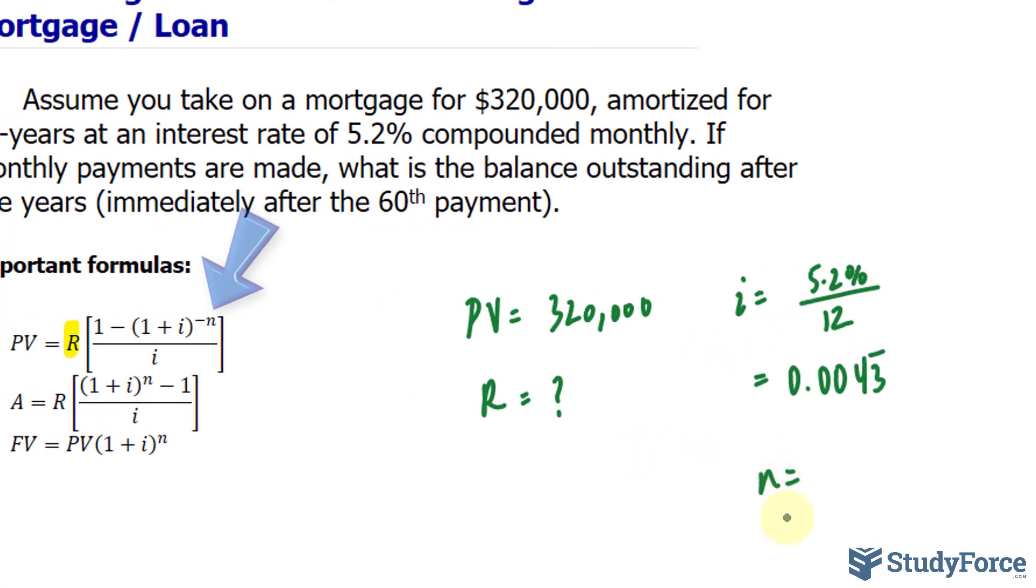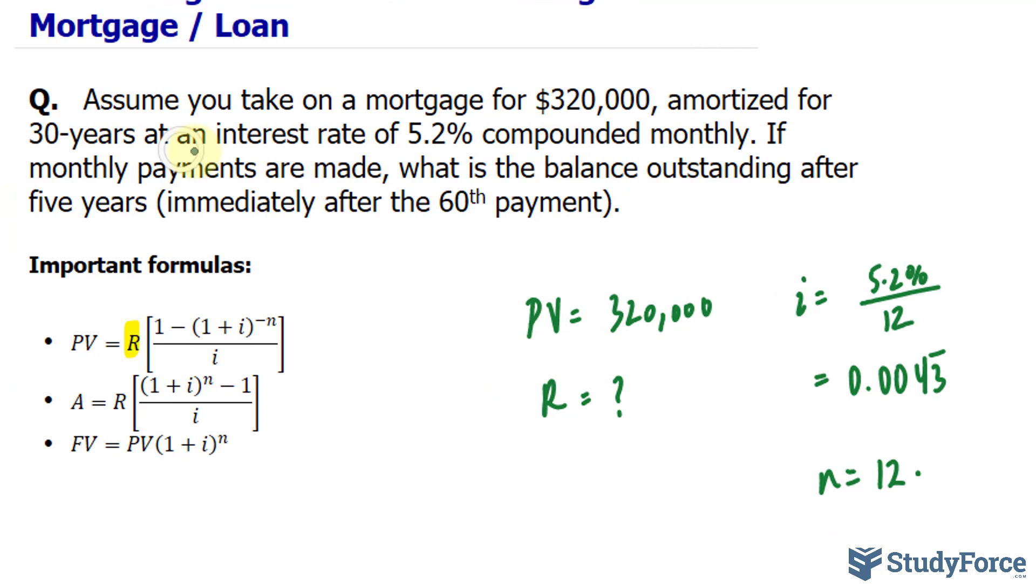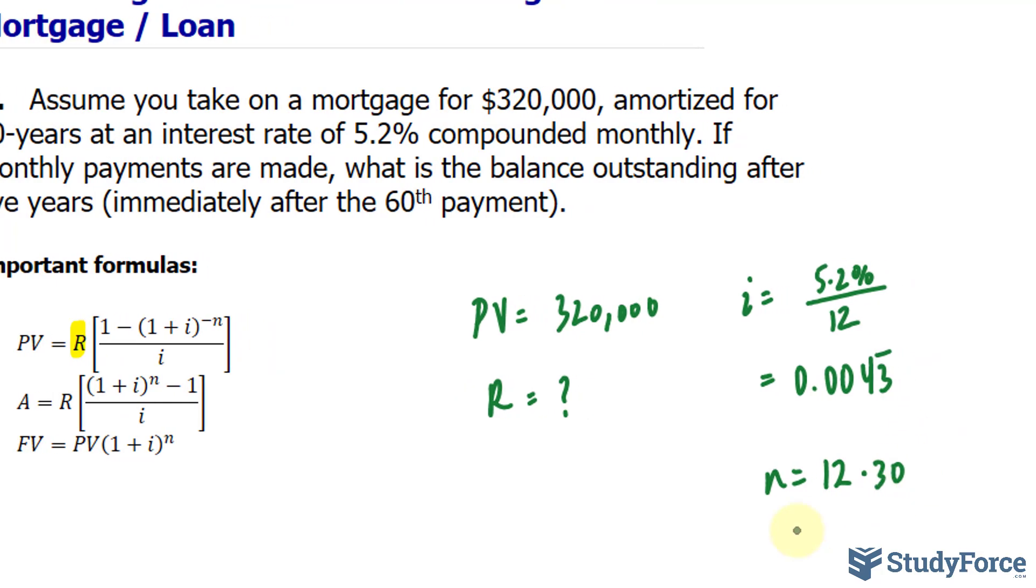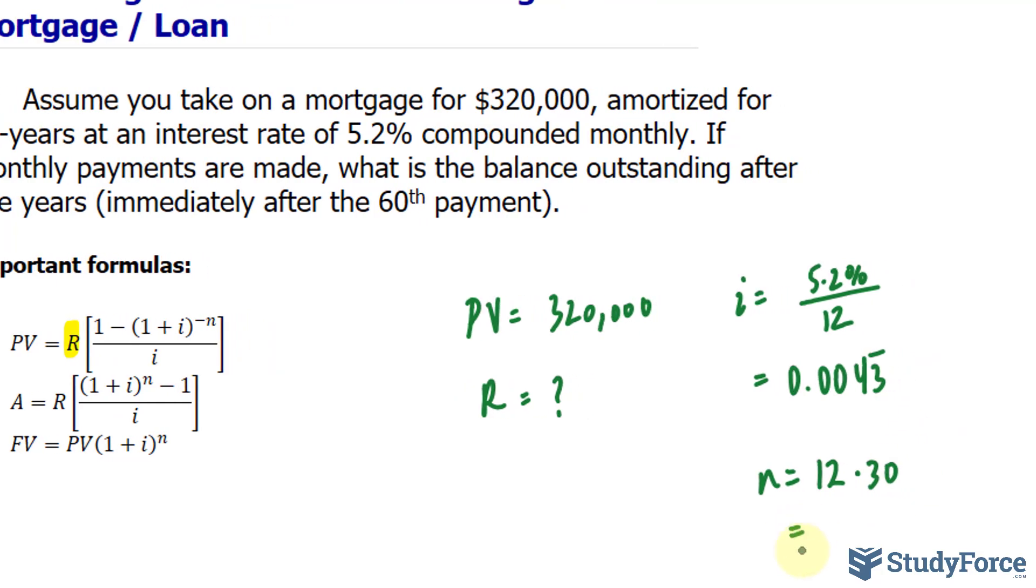And so we have 0.0043 repeating. N is the number of periods. So since it is being compounded monthly, we take 12 and we multiply that by the number of years that this mortgage is being amortized, which is 30. 12 times 30 is 360.